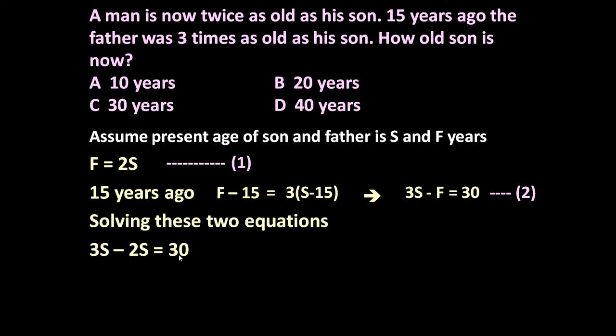Now simplify these two equations. 3S minus F, F is equal to 2S. Put it in this equation: 3S minus 2S is equal to 30. Solve this: S is equal to 30 and F is equal to 60. Father's present age is 60 years and son's present age is 30 years. So the answer is 30 years.